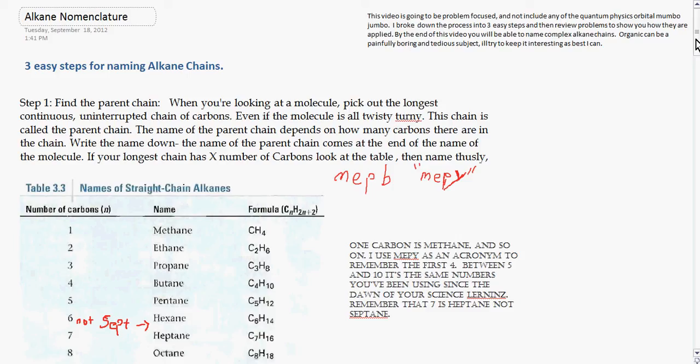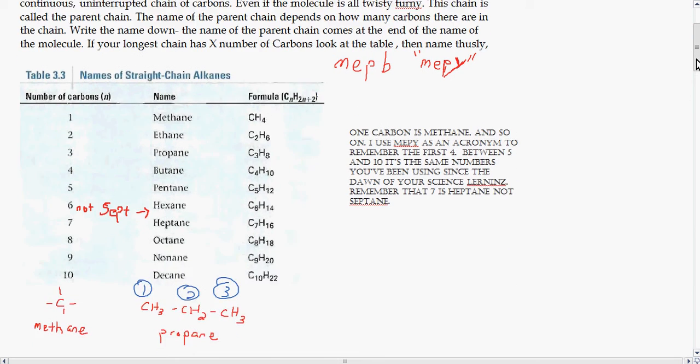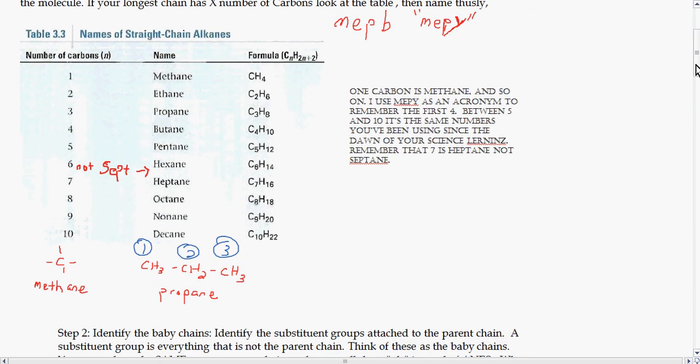Three easy steps for naming alkane chains. Step one, find the parent chain. When you're looking at a molecule, pick out the longest continuous uninterrupted chain of carbons, even if the molecule is all twisty-turny. The chain is called the parent chain. The name of the parent chain depends on how many carbons there are in the chain. So write that name down, the name of the parent chain, and that name comes at the end of the name of the whole molecule. If your longest chain has X number of carbons, look at the table, then name thusly.